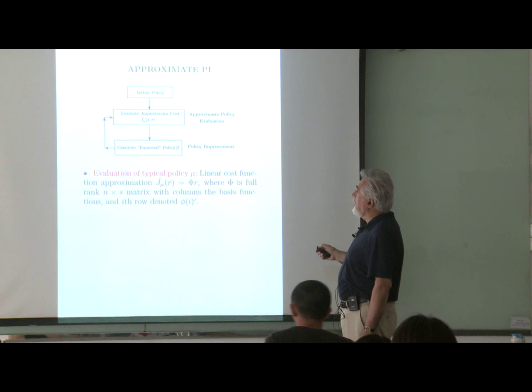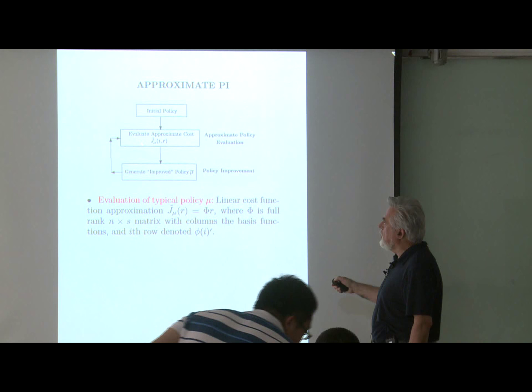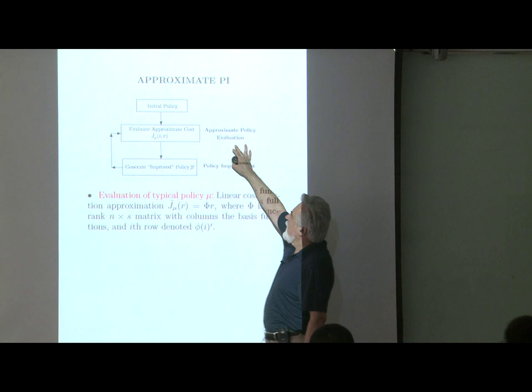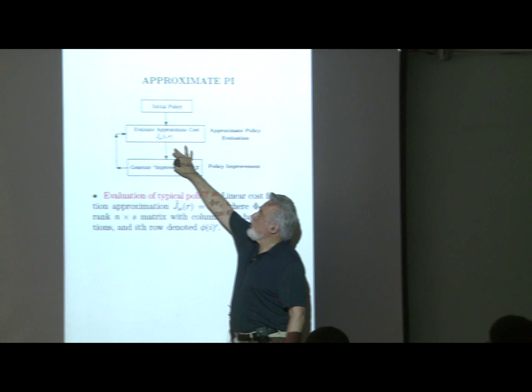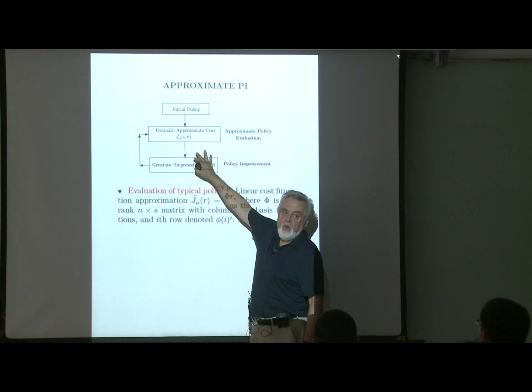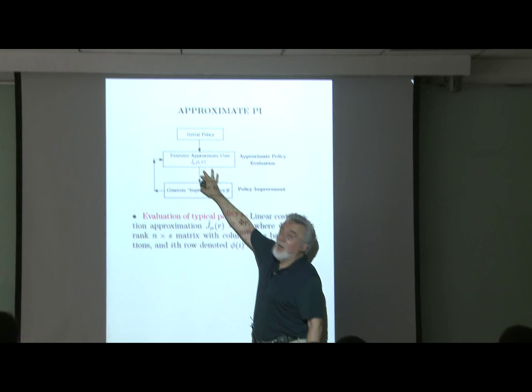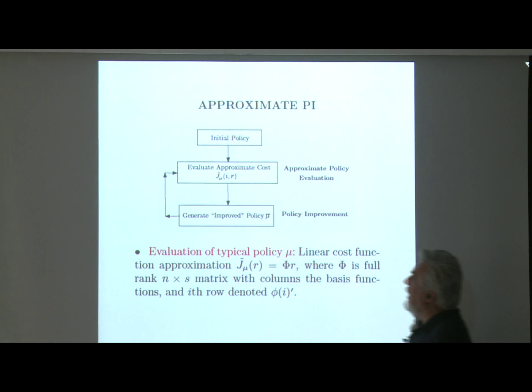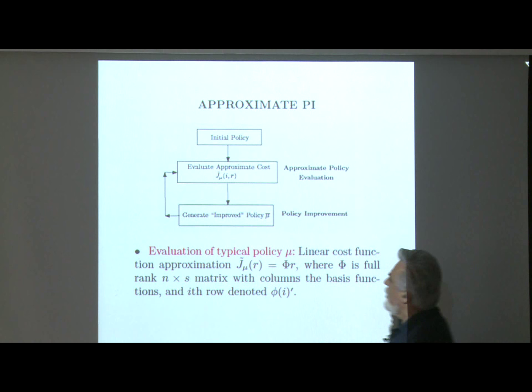Policy iteration starts with a policy, evaluates it, then computes an improved policy and so on. Approximate policy iteration simply involves an approximation at the policy evaluation stage, instead of solving the corresponding evaluation equation exactly — which is a linear equation of potentially gigantic size. We consider an approximation involving an approximation architecture and the parameter R, and then use this approximation to generate an improved policy.